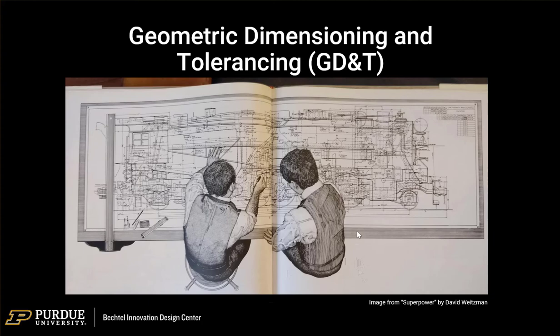Looking at this picture here at the beginning, which is from a really great kids' book about making a steam locomotive called Superpower — a beautiful pen and ink drawing of two draftsmen working on this locomotive. You can see there's a square on the edge of the board that would slide along and automatically give them a normal line to the top, and they would pin paper down on four corners to move and extend lines square and parallel throughout the whole sheet.